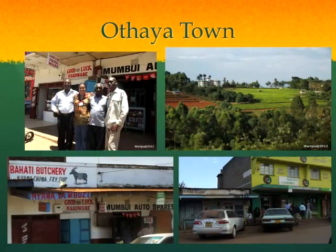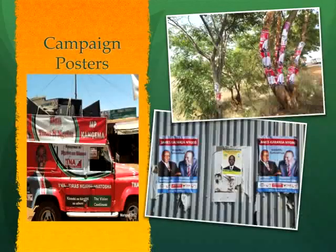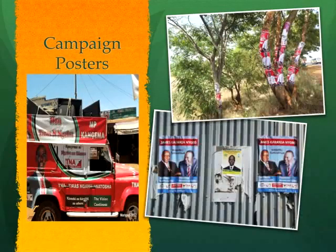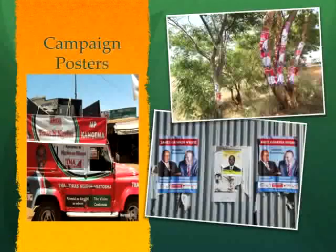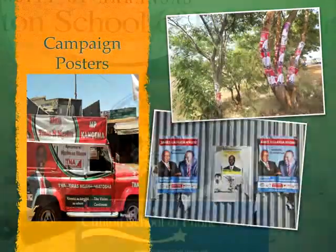This is the Othaya region and gives a sense of what the town looks like. This gives you a sense of the campaign level — heavily campaigning, lots of posters. Here's Uhuru, and here's an MP candidate running. You had posters even on trees. This also shows what the town of Muranga looks like — the two up-country locations I told you about.